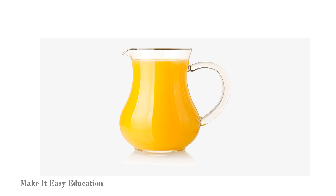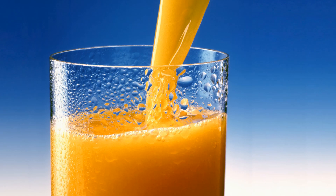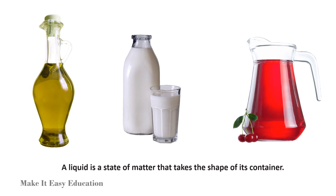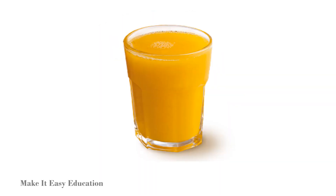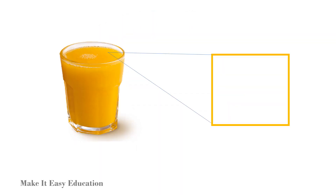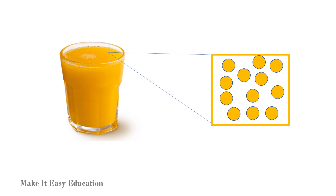Is juice a solid? No. Juice is a liquid. It does not have its own shape. If you pour the juice into a container, the shape of the juice changes. A liquid is a state of matter that takes the shape of its container. We can measure the volume of a liquid. In liquids, the particles are looser and can move about easily.